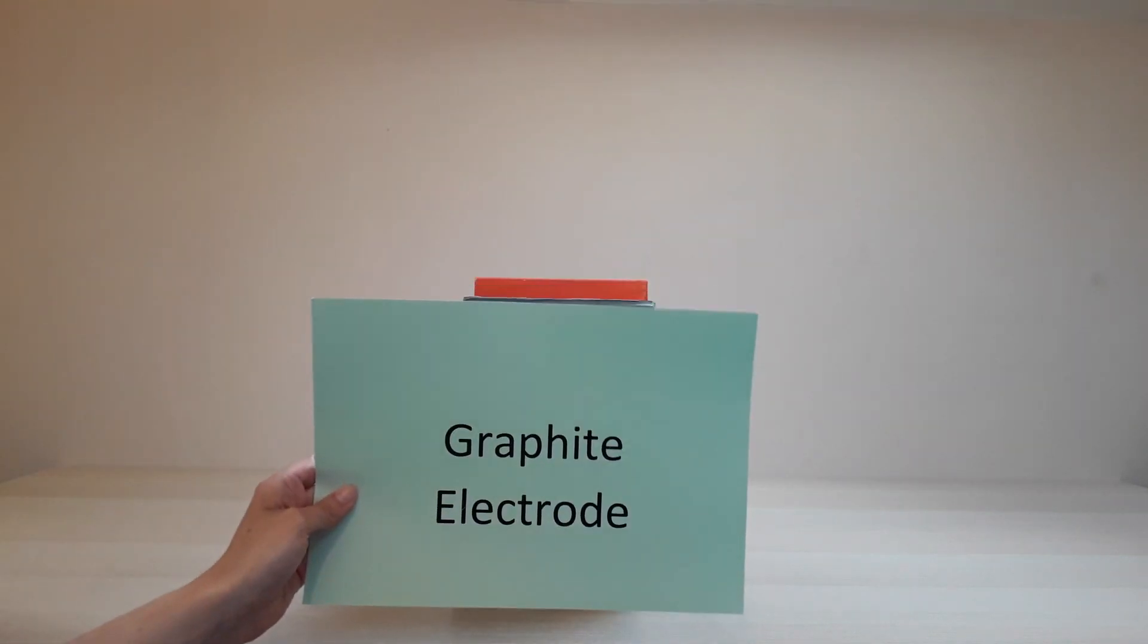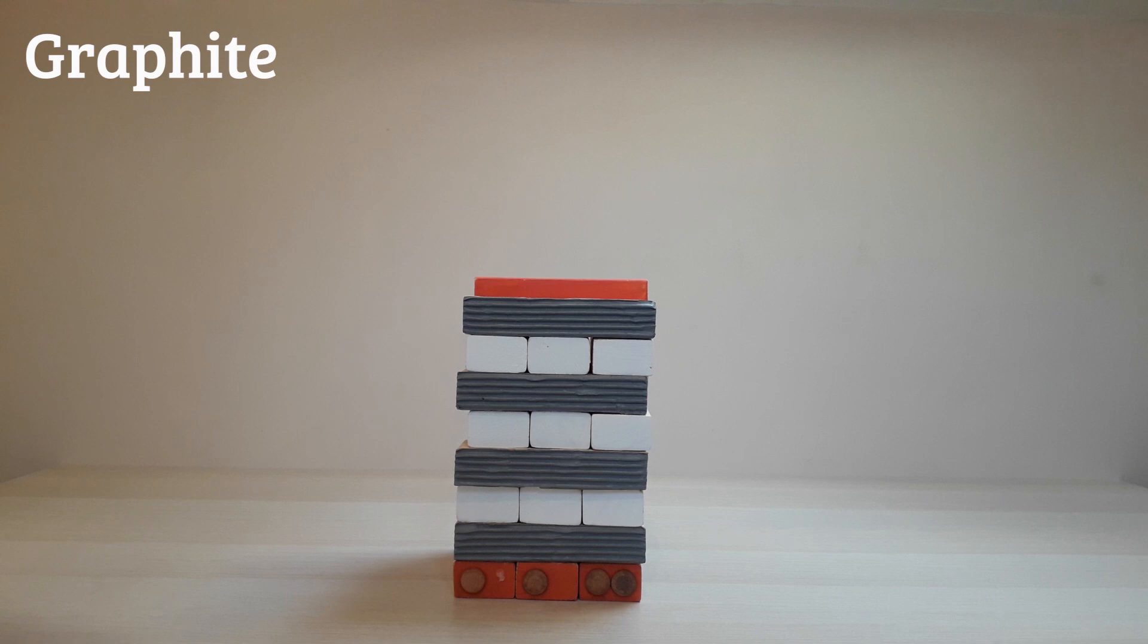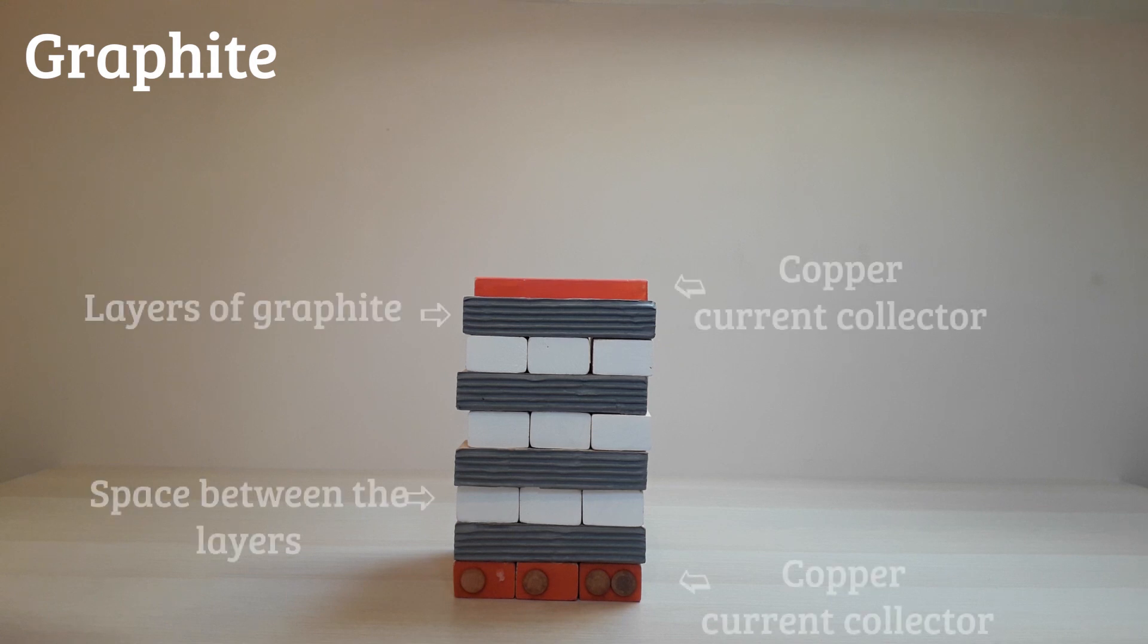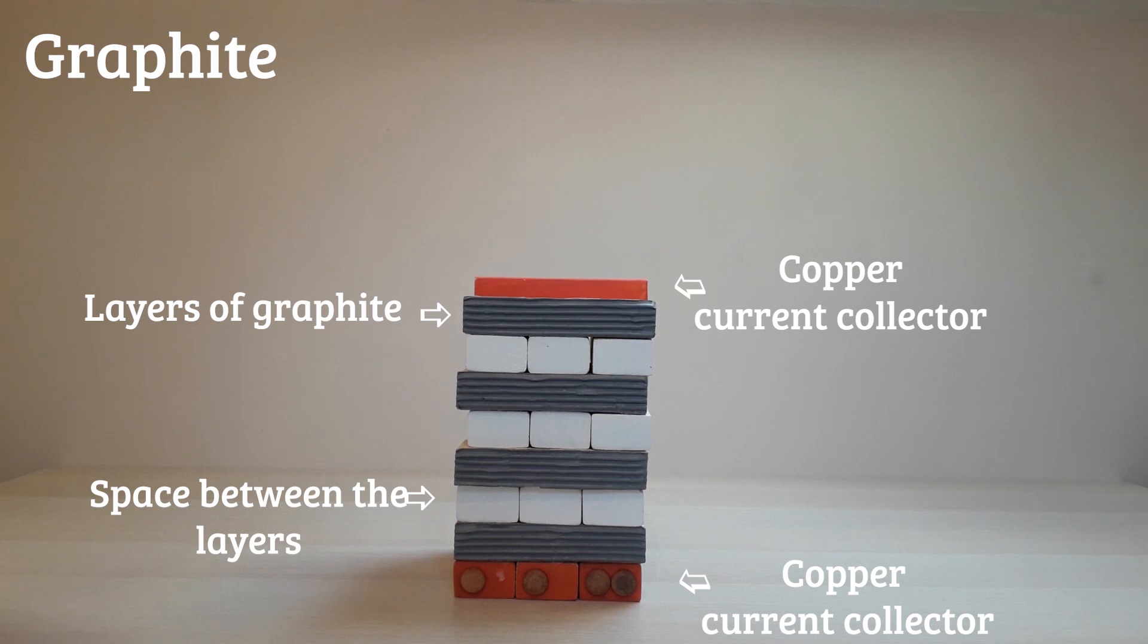The other electrode is the graphite electrode. You could ask the class where they can find graphite in the classroom. The grey textured cardboard represents sheets of graphite. The white blocks represent the space between the graphite layers. The top and bottom orange blocks represent the copper current collector. We have affixed copper one-pence pieces to represent this.